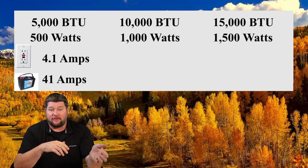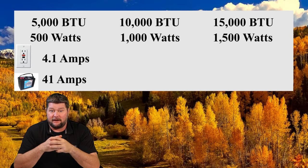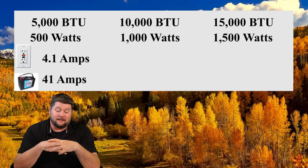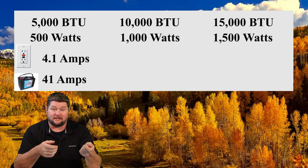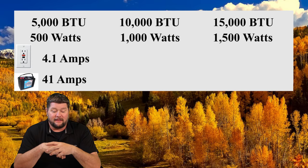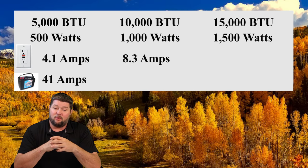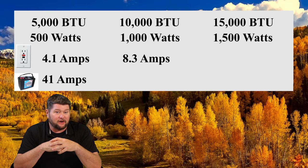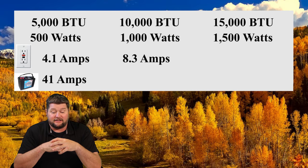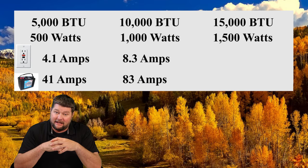As far as the 1,000-watt window unit, that's going to use — if you're plugged in at home with 120 volts at your wall socket — 8.3 amps. If you're trying to run that off battery power and you're using a 12-volt system, that's going to cost you a whopping 83 amps of power.